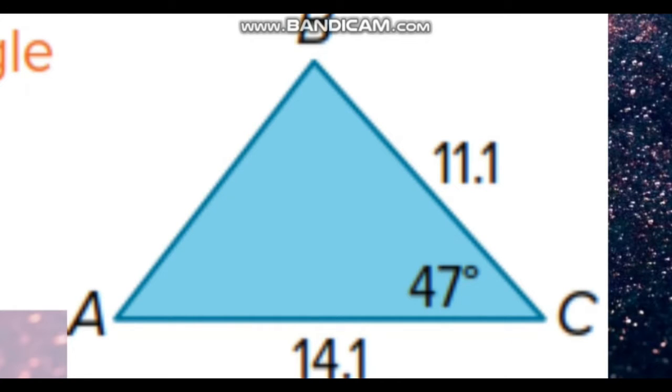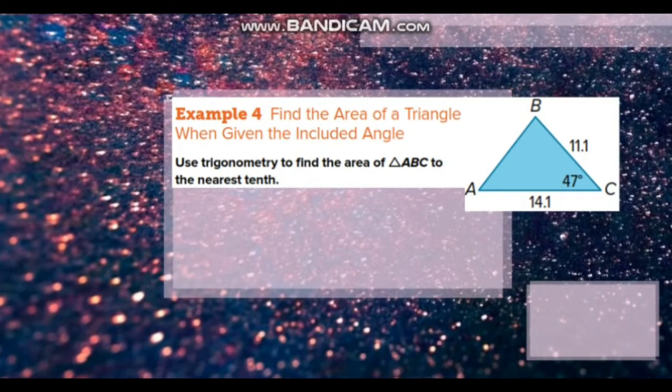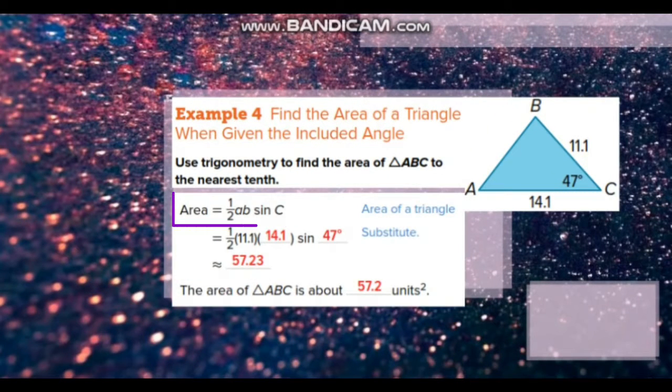So we are going to apply the area rule that we use the sine in it. Area is equal to half AB sine C. That is equal to half times 11.1 times 14.1 times sine angle C, that is 47 degrees.